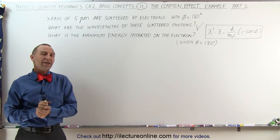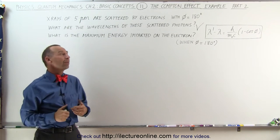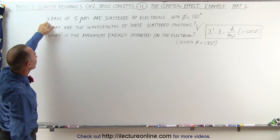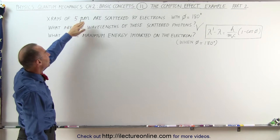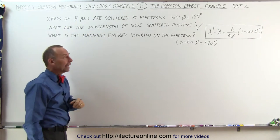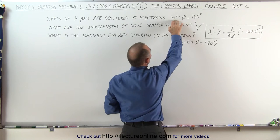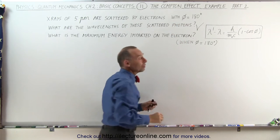Welcome to ElectronLine. Now let's do part two of the same problem that we did before in the previous video. We had x-rays starting with five picometers being scattered by electrons, and in this case we're going to look at electrons scattering the photons at an angle of 180 degrees.